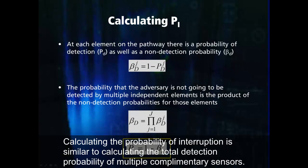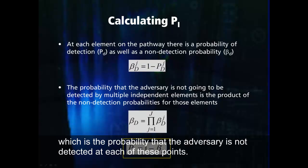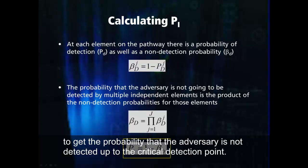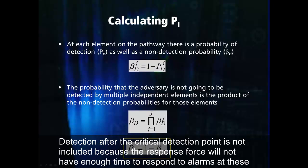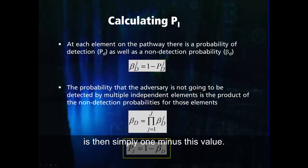Calculating the probability of interruption is similar to calculating the total detection probability of multiple complementary sensors. We will use the non-detection probability of each detection point before the critical detection point, which is the probability that the adversary is not detected at each of these points. We can then multiply all of these together to get the probability that the adversary is not detected up to the critical detection point. Detection after the critical detection point is not included because the response force will not have enough time to respond to alarms at these sensors. The probability of interruption, which is the probability that the adversary is detected before the CDP, is then simply 1 minus this value.